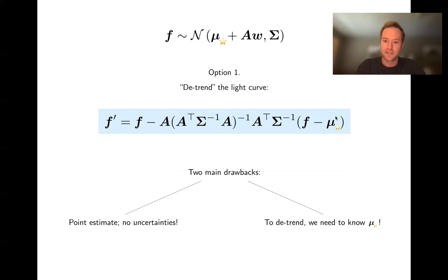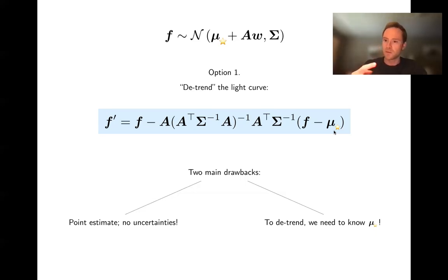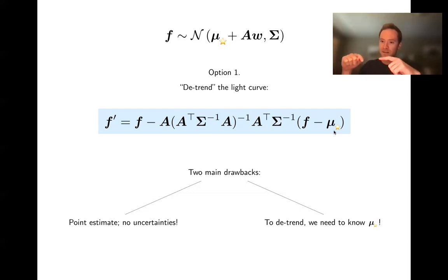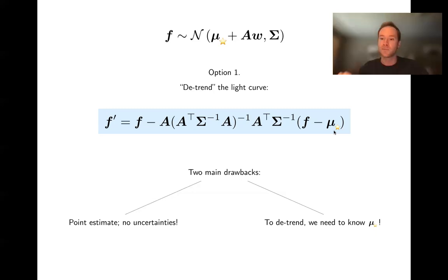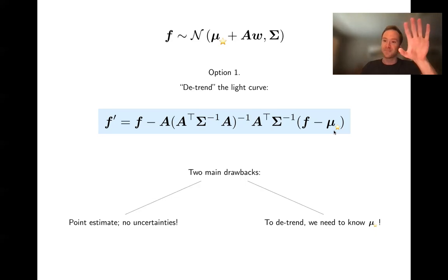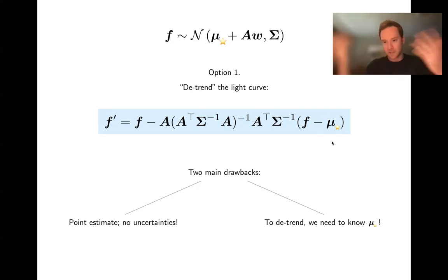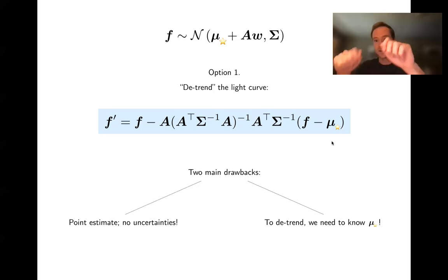The other main drawback is that mu_star — the thing we're interested in — is on the right-hand side of the equation. So in order to detrend the light curve, I need to know what the answer is ahead of time, which is circular. When I fit a systematics model to the data and subtract it off, the data also includes transits, stellar variability, pulsations. If my systematics model is flexible enough, it might fit out the transit or stellar variability. So in order to do this properly, I need to subtract out the physics model first, fit the systematics model, subtract it off, then add the physics back in — but I don't know the physics model ahead of time.